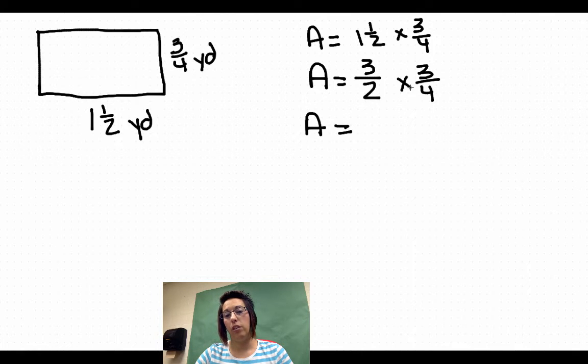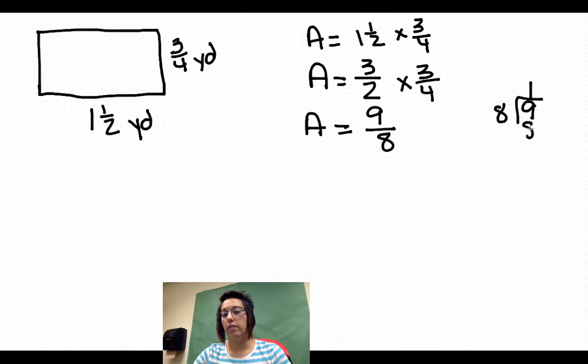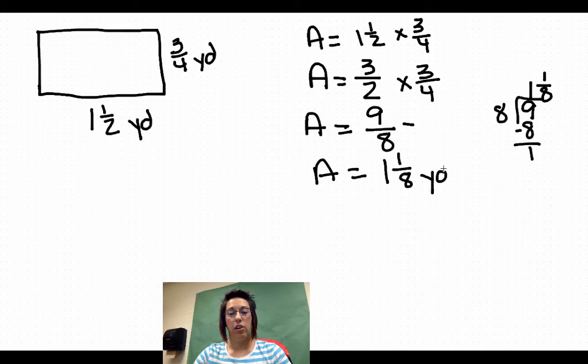Area equals three times three is nine. Two times four is eight. It is improper. Eight will go into nine once and have one-eighth left over. So area equals one and one-eighth yards squared because it is area.